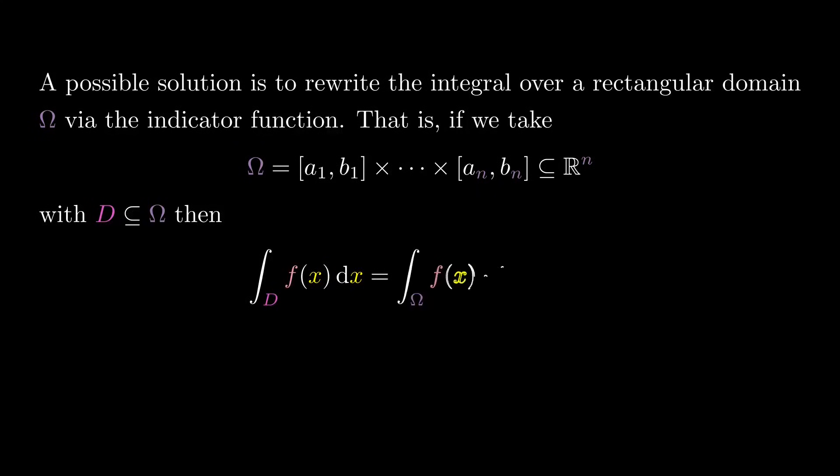This way, we can sample points uniformly on an easy domain. Furthermore, the original domain could be enclosed within a union of boxes, providing a tighter cover and thus improving accuracy.